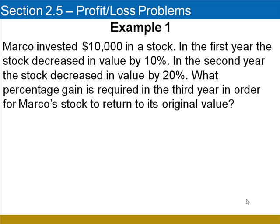In the first example, Marco invested $10,000 in a stock. In the first year, the stock decreased in value by 10%. In the second year, the stock decreased in value by another 20%. What percentage gain is required in the third year in order for Marco's stock to return to its original value? The most common error is to simply add 10 and 20% together and declare that the stock must go up by 30%. We'll see as we work out the problem that this is not true.